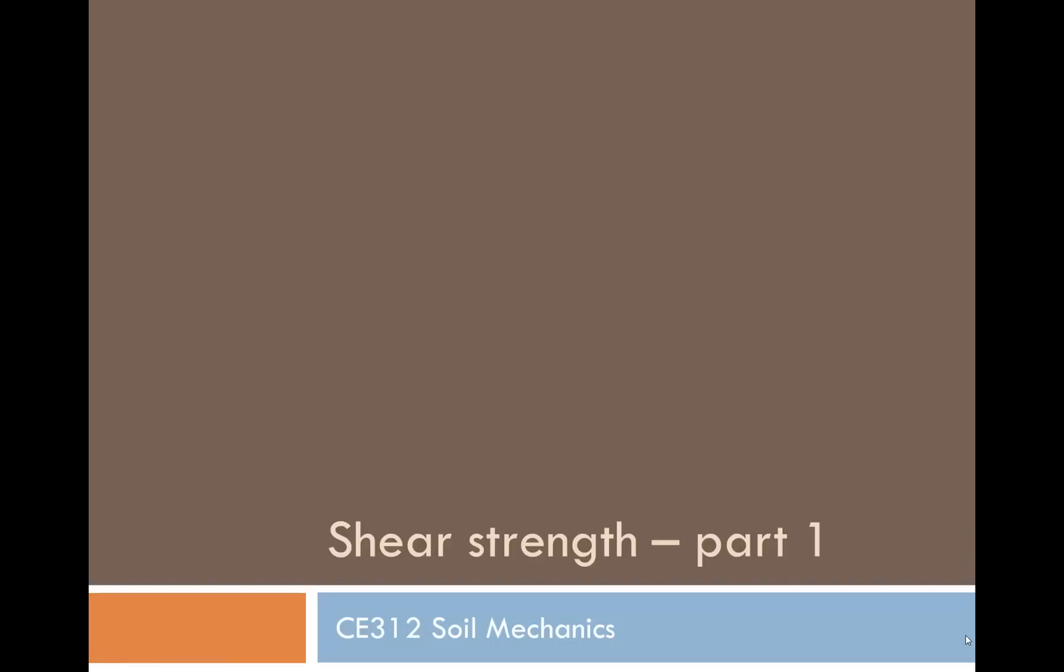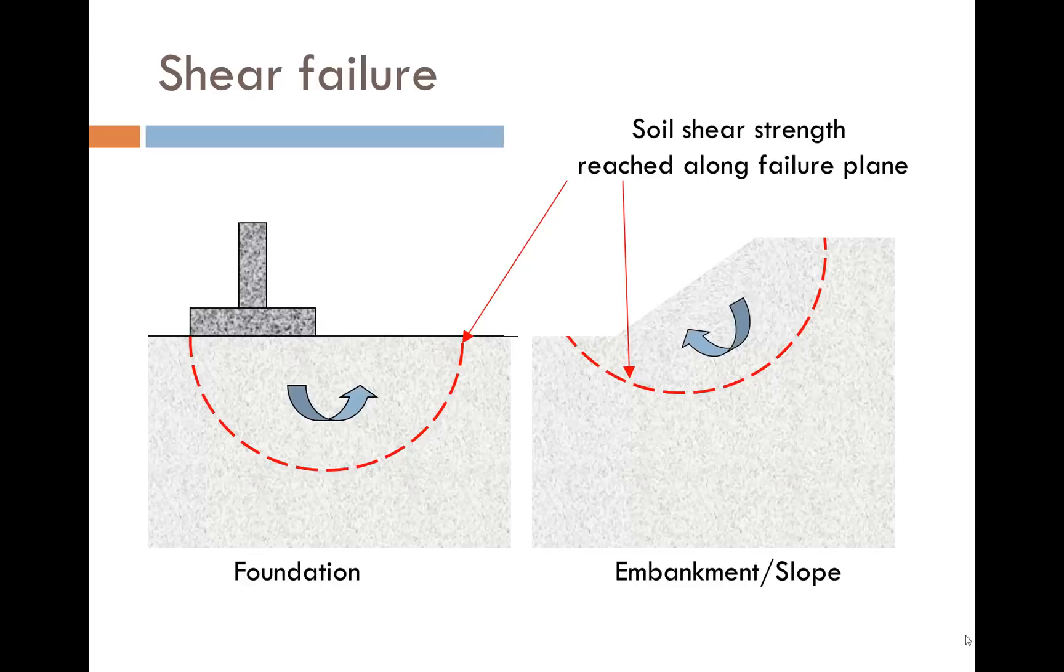Soil generally fails in shear, and this section is the first of two covering the shear strength of soil. Here are two examples of shear failure in soil. On the left is the failure surface typically associated with a foundation. On the right is the failure surface typically associated with a slope at the edge of an embankment. In both cases, the soil fails when the shear stress along the plane reaches the shear strength of the soil.